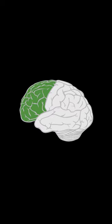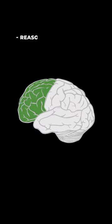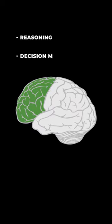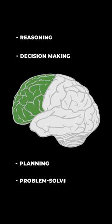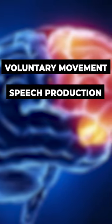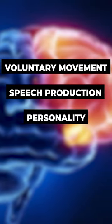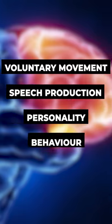Frontal lobe, located at the front of the brain, is responsible for executive functions such as reasoning, decision-making, planning, and problem-solving. It also oversees voluntary movement, speech production, and aspects of personality and behavior.